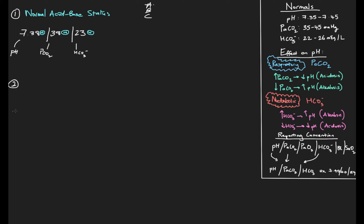Number two: pH is 7.20, CO2 is 68, and bicarb is 25. Using our ABC process, step A is to look at the pH. At 7.20, that's below our lower limit of 7.35, so our pH is low - decreased. We can say right off the bat that we have an acidosis.